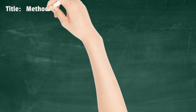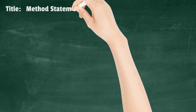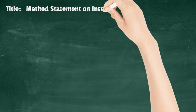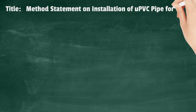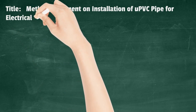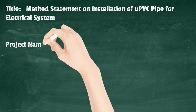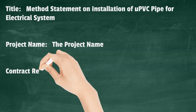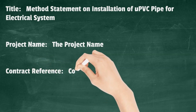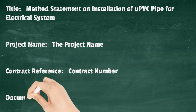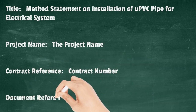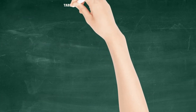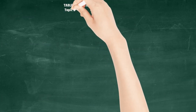Title: Method Statement on Installation of UPVC Pipe for Electrical System. Project Name, Contract Reference, Contract Number, Document Reference: MST001.